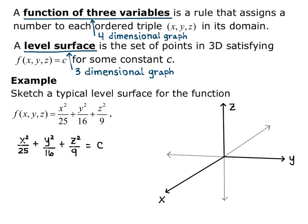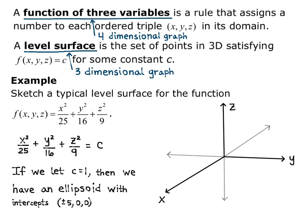Now, for a typical level surface, we can pick a value for c. If we let c equal 1, then we have an ellipsoid with intercepts plus or minus 5, 0, 0, 0, plus or minus 4, 0, and 0, 0, plus or minus 3.